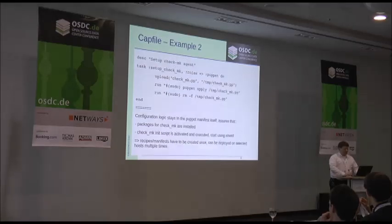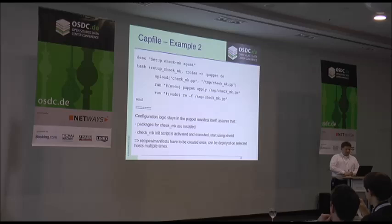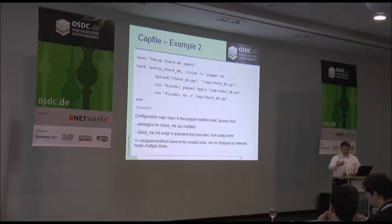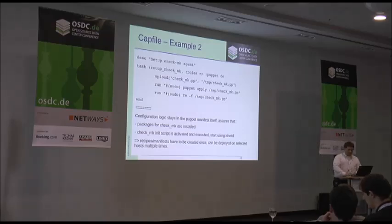This is another example for the check-mk agent, where we just again copy over with the upload functionality of Capistrano the check-mk file, then run puppet apply. The key point I want to present on this slide is that the logic about how check-mk should behave and be configured is not in the Capistrano file, but it's in the Puppet recipes.